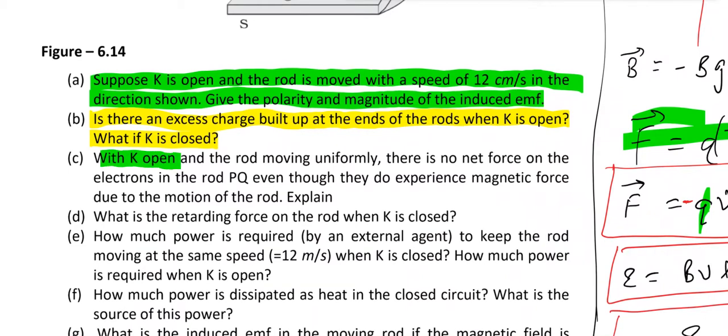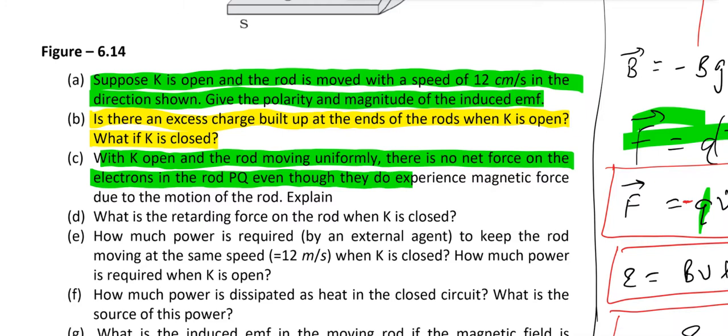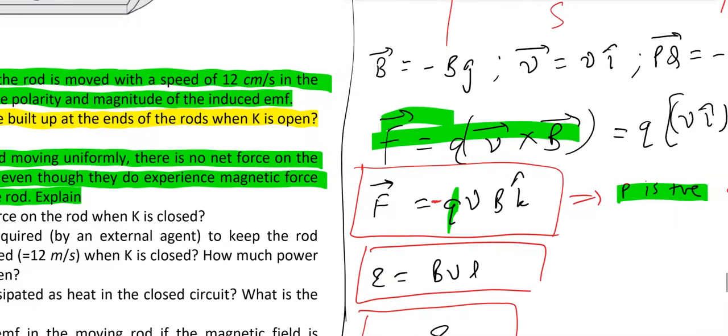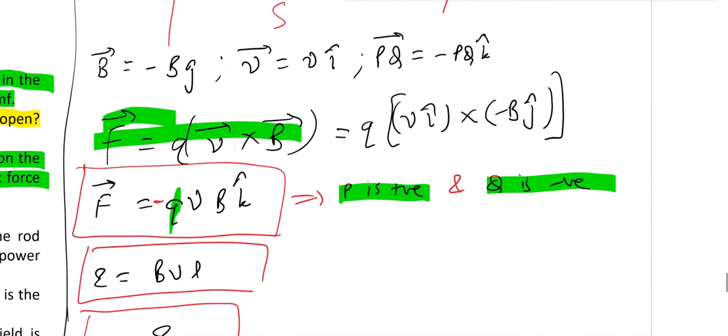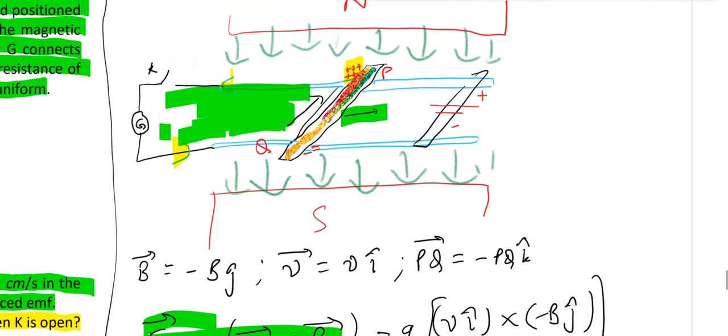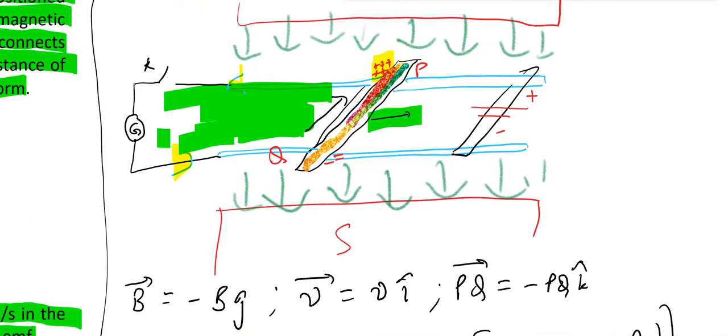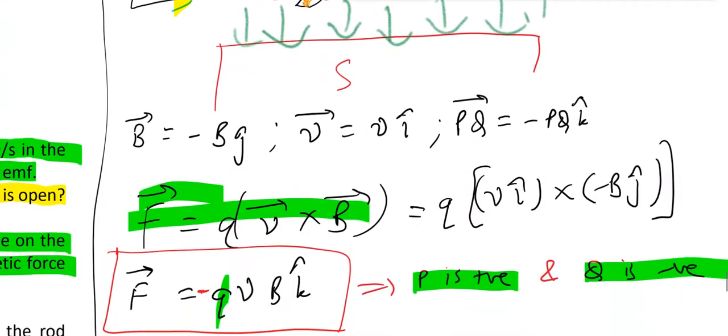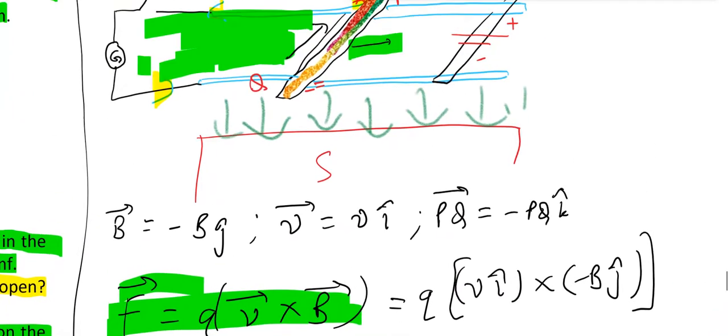With K open and the rod moving uniformly, there is no net force on the electrons in the rod PQ, even though they do experience magnetic force due to the motion of the rod. Now the question is that if you don't have key closed, then there is no current. If there is no current, what is happening? Does it mean there is no force? You have this force, right? What is this force doing?